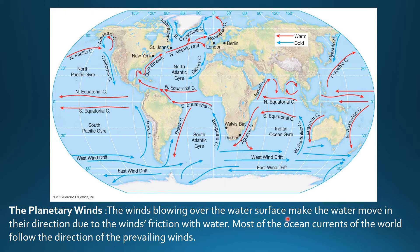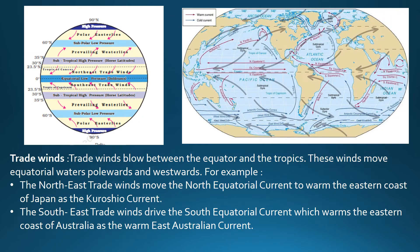The next cause is planetary winds. Winds blowing over the water surface make the water move in their direction due to the wind's friction with water. Most of the ocean currents of the world follow the direction of the prevailing winds. First, we look at the trade winds. Trade winds blow between the equator and the tropics and move equatorial waters polewards and westwards.